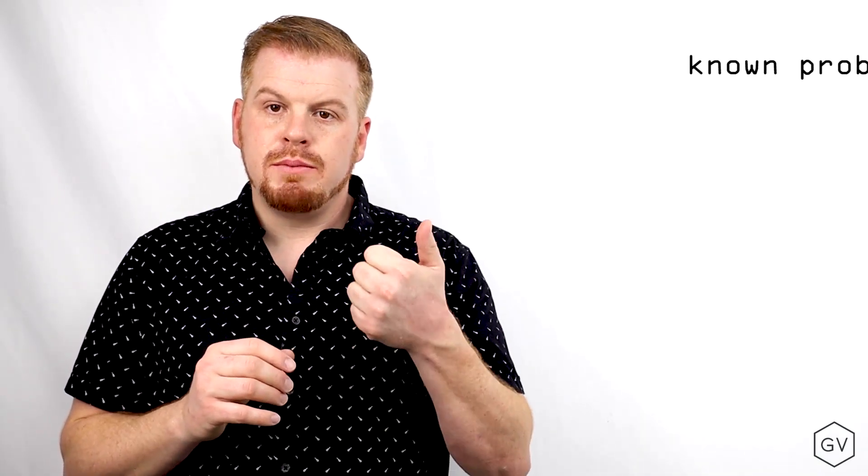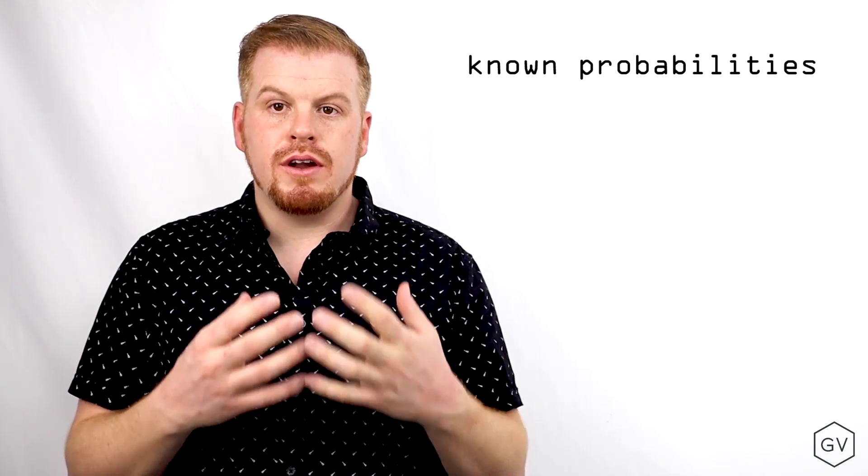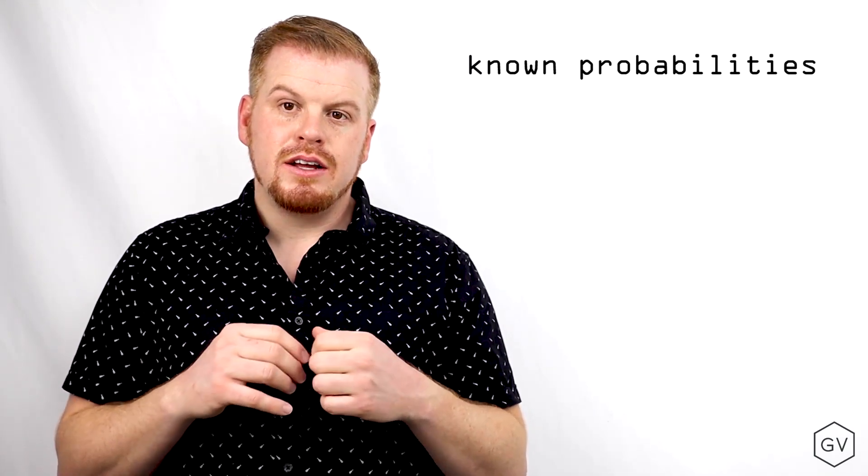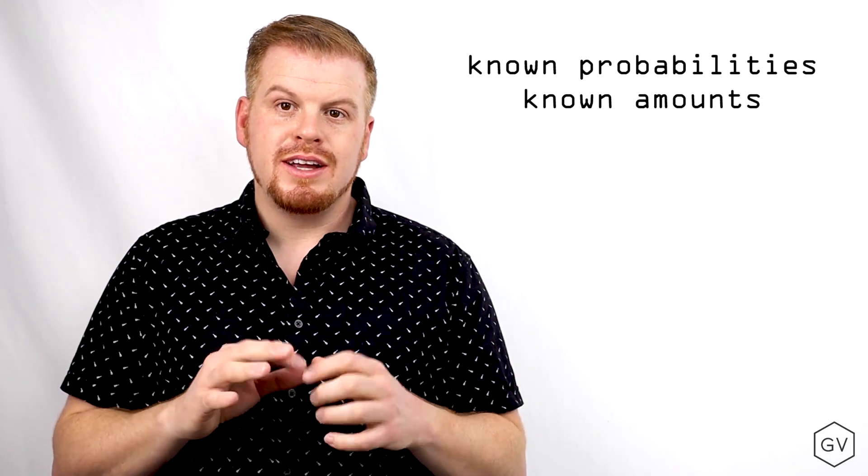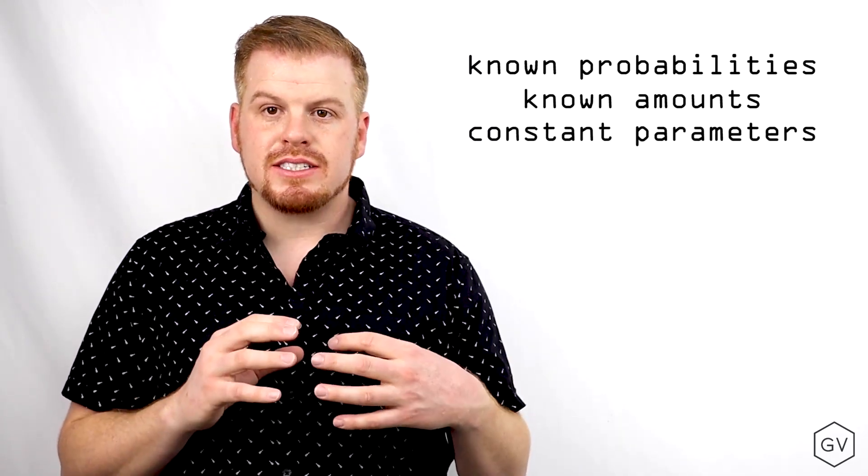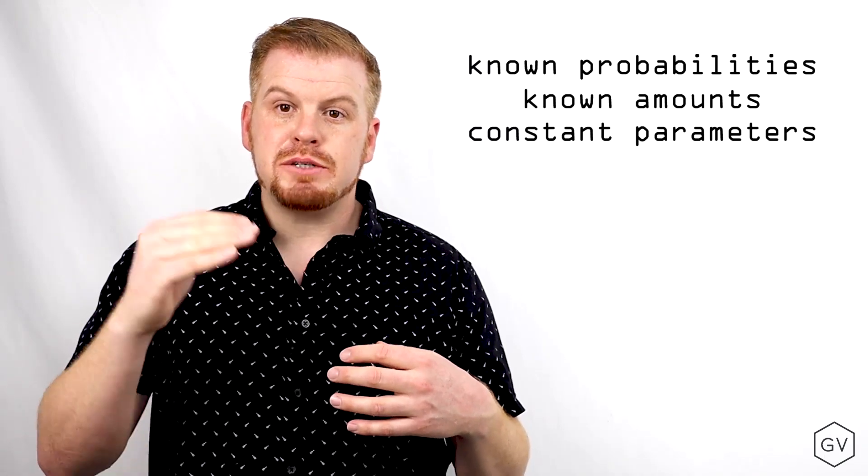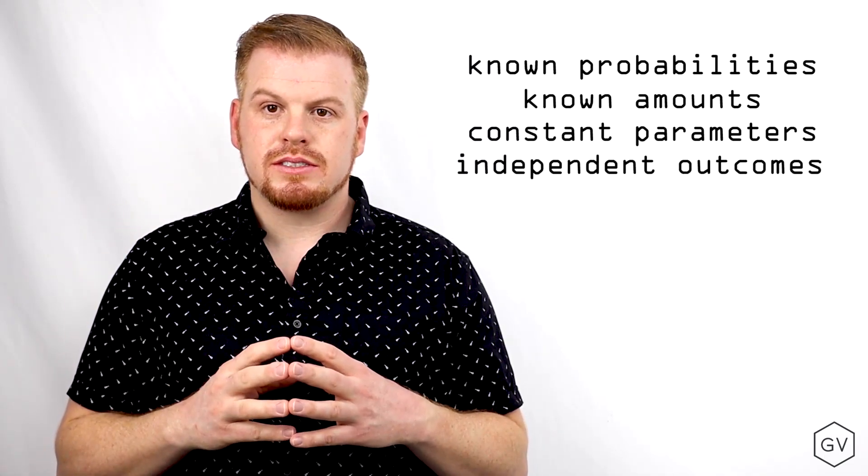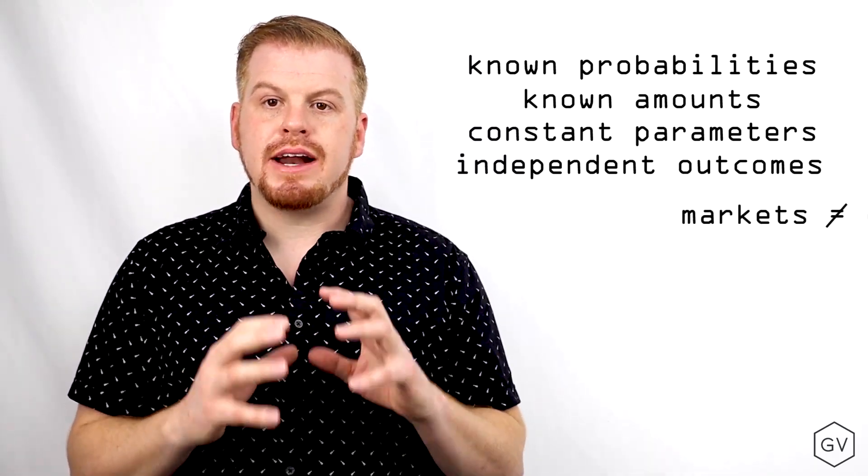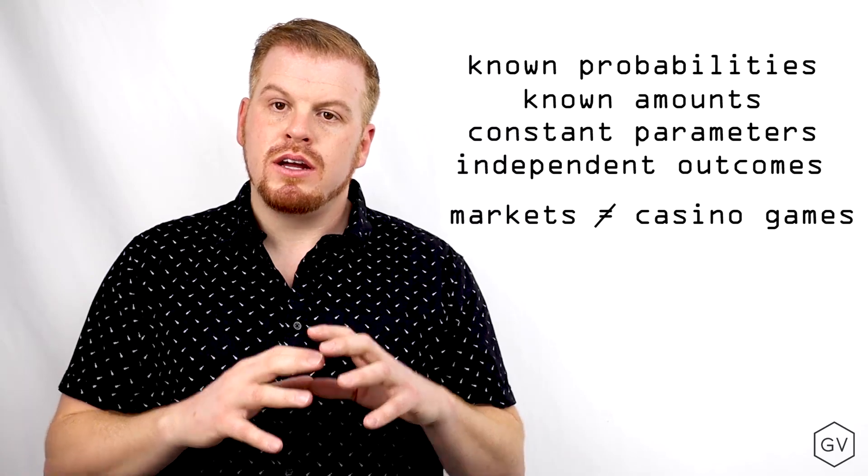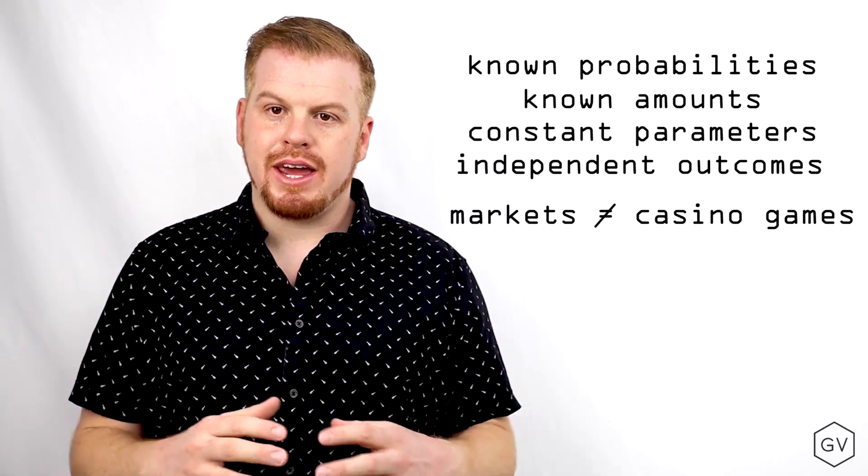Implicit in the Kelly criterion ratio are some important assumptions. First, the probability of winning and losing are known. Second, the win amount and loss amount are known. Third, is that all these variables are fixed. Fourth, is that each play is independent from one another. These things get more complicated when we're applying this to financial markets as opposed to predetermined casino games.